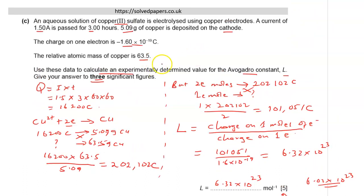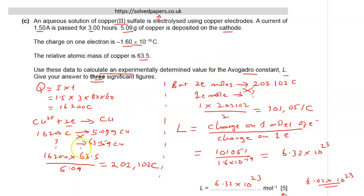Those are the two questions set in the October/November 2019 series on electrochemistry. Get more topical questions from SolvedPapers.co.uk and practise solving them as you prepare for your Cambridge exams. If you need my help, find me at SPAcademy.co.uk. I'll be glad to help with your preparation. See you in my next video — cheers!